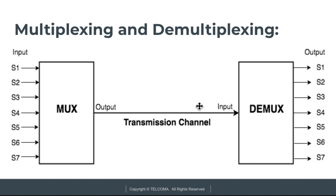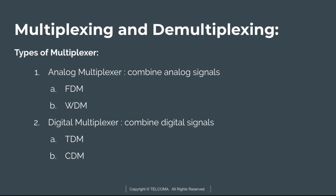The demux will separate all the signals — s1 to sm. The types of multiplexers are: analog multiplexers, which combine analog signals, and digital multiplexers, which combine digital signals. Analog multiplexers include FDM (Frequency Division Multiplexing) and WDM (Wave Division Multiplexing). Digital multiplexers include Time Division Multiplexing and Code Division Multiplexing.